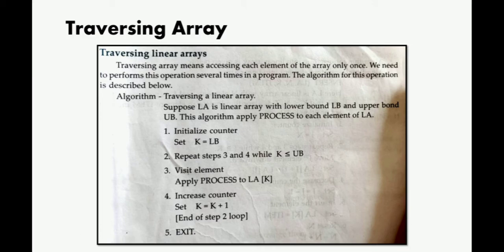Traversing a linear array: suppose LA is the linear array which has the lower bound of LB and upper bound of UB. As I told you, lower bound means minimum address where your arrays are stored, and upper bound means the maximum address till where your arrays are stored.